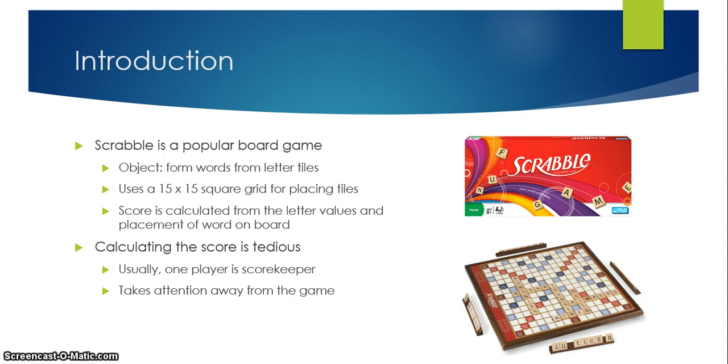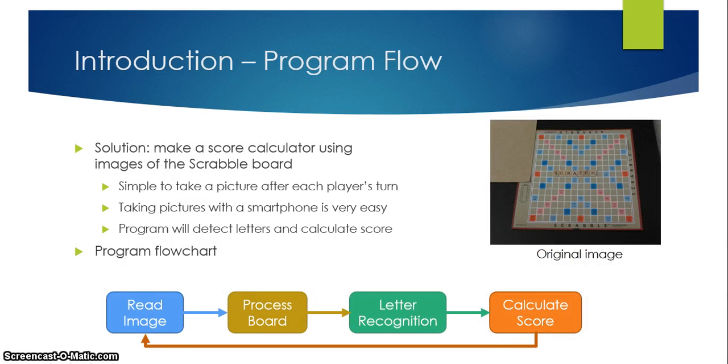The score is usually calculated after every turn and it gets tedious because usually one player of the game is designated as the score keeper and he or she must tabulate all the scores after each turn. Doing the act of tabulating all the scores gets tedious after a while and it takes away from the fun and enjoyment of the game and disrupts the flow of the game. So therefore I came up with an idea to have an automatic score calculator using MATLAB. What this program does is you take an image of your board after every turn and then you feed into this program one image at a time. This program would then detect the letters on the board and calculate your score.